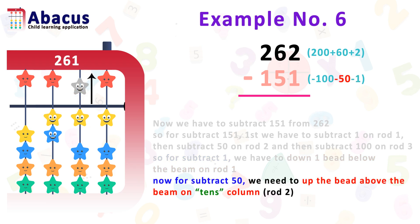Now, for subtract 50, we need to up top bead on tenths column above the beam. And tenths column means rod 2.